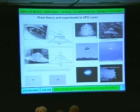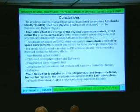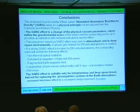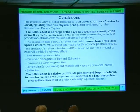Investigating these phenomena, we found so much similarity with effects about UFOs that is predicted by this physical effect. The conclusions are that the predicted gravitoinertial effect — which I call stimulated anomalous reaction to gravity — relies on a physical principle not envisioned from classical and modern physics. This effect is a change of the physical vacuum parameters which define the gravitoinertial mass.